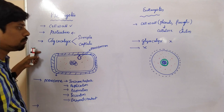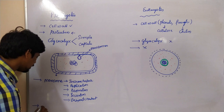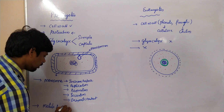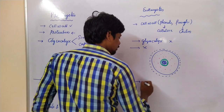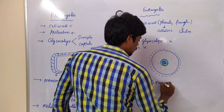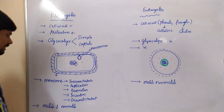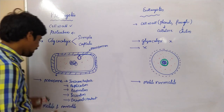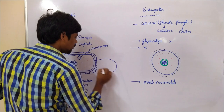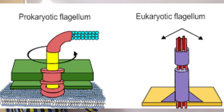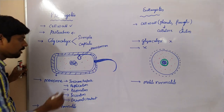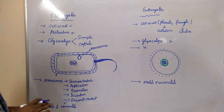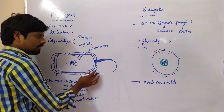Prokaryotic cells are both motile and non-motile, and eukaryotic cells are also both motile and non-motile. Motile cells contain an internal structure called flagella. Flagella is very essential for the movement of bacteria. If flagella is not present, such organisms are non-motile — they cannot move in any direction.